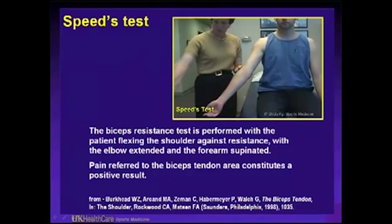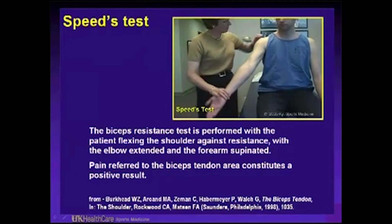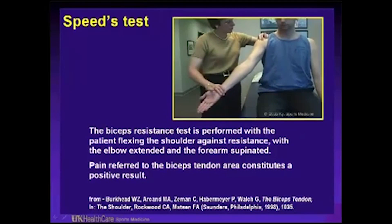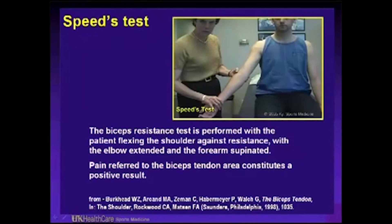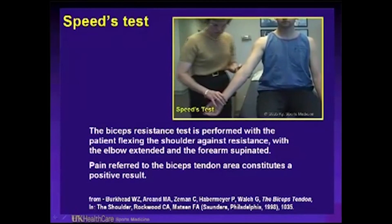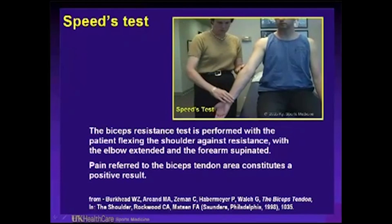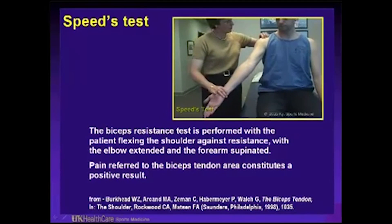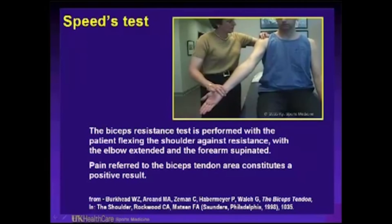The Speed's test: the palm is up, forearm supinated. You ask the patient to flex their shoulder against the resistance of your hand with the elbow extended, and this creates pain in the proximal biceps in the groove that you're palpating. If this creates pain, then it's a positive test.